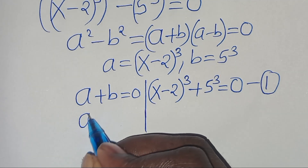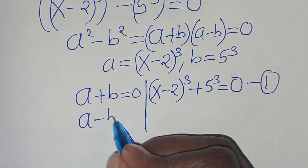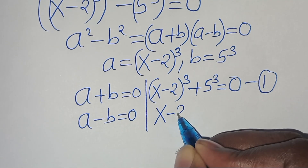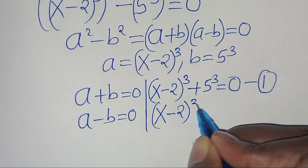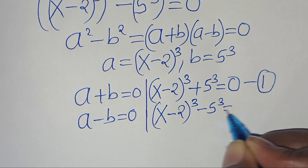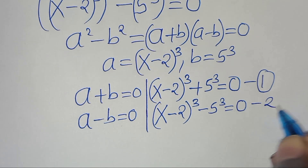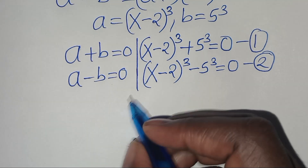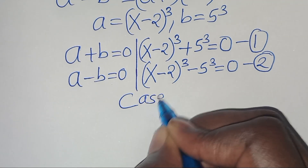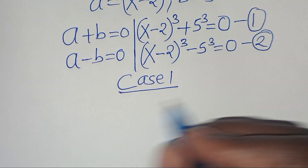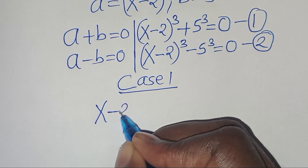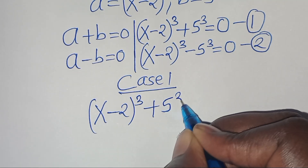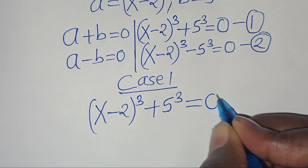And setting a minus b equal to 0 gives us (x minus 2)^3 minus 5^3 equal to 0. Rearranging, this is (x minus 2)^3 plus 5^3 — wait, equation 1 covers (x minus 2)^3 plus 5^3 equal to 0.